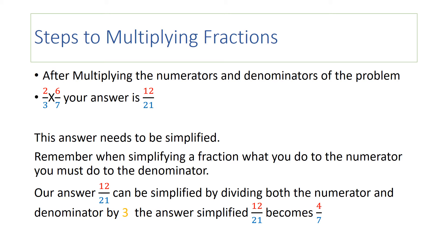This answer needs to be simplified. Remember, when simplifying a fraction, what you do to the numerator, you must do to the denominator. Our answer is twelve-twenty-firsts. It can be simplified by dividing both the numerator and the denominator by three. After simplifying twelve over twenty-one, our answer becomes four-sevenths.